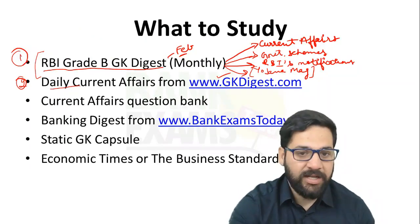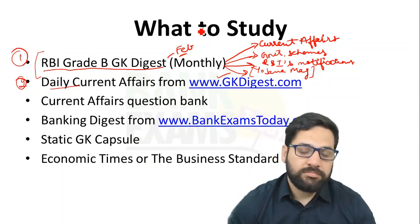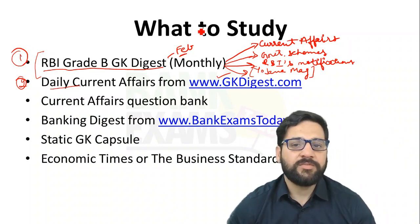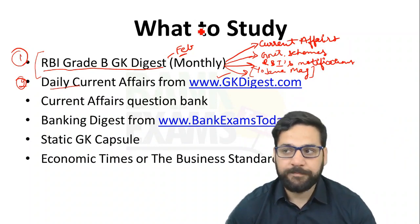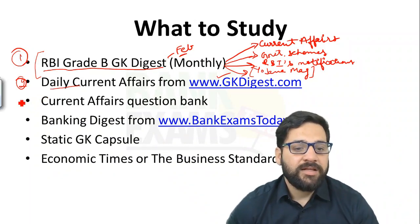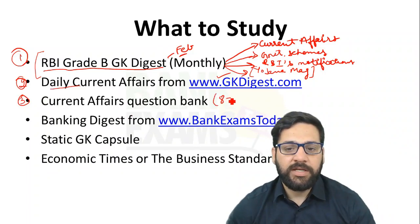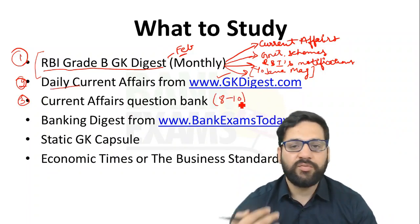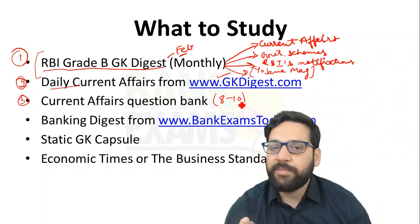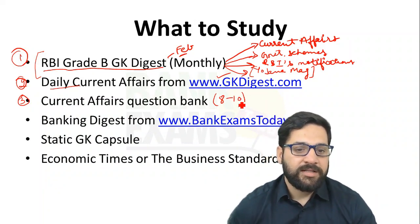In the RBI Grade B GK Digest, we are analyzing and summarizing the notifications and circulars by RBI, SEBI, and CBDT. Daily current affairs are also there. Every month we prepare a current affairs question bank — daily we prepare 8 to 10 questions, and at the end of the month there are 300 to 400 questions. We make a PDF and provide it to our students — you can download it.